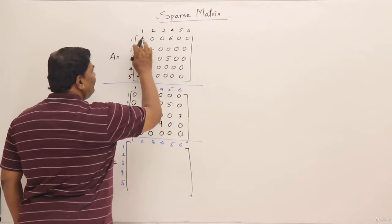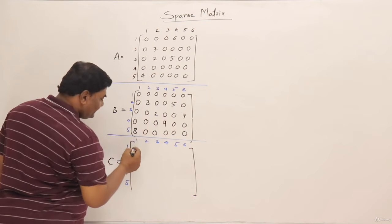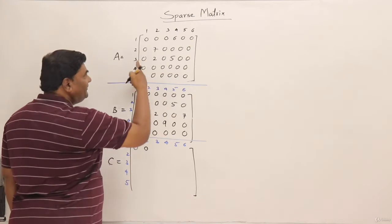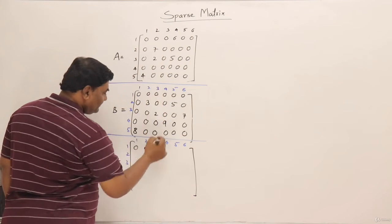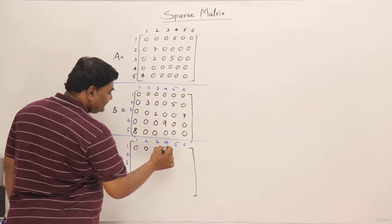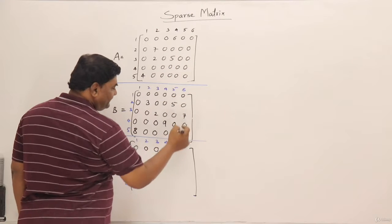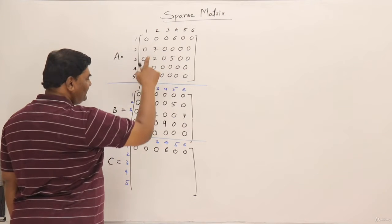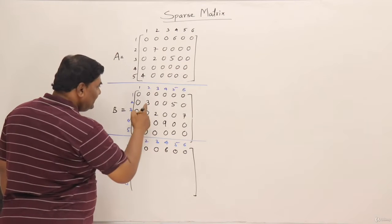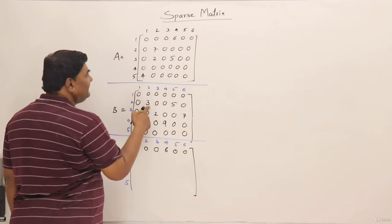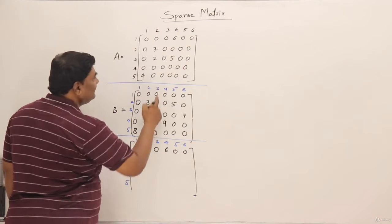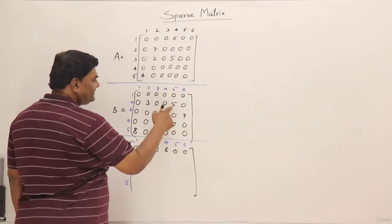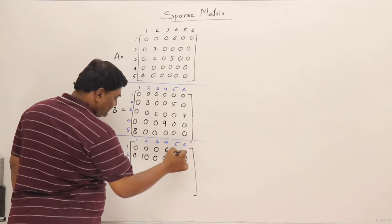Starting with the first element at position (1,1): 0 plus 0 is 0. Position (1,2) is also 0. The remaining first-row elements are 0 except for the element 6 where the corresponding B element is 0, so 6 plus 0 is 6. In the second row, we have a nonzero element; 7 and 3 are at the same index i and j, so 7 plus 3 becomes 10. The next nonzero has 0 here, so it will just be 5.